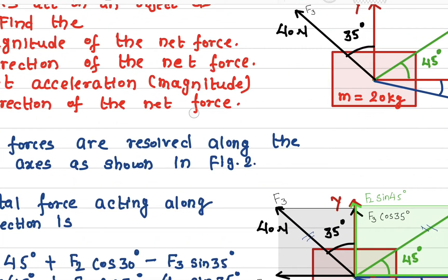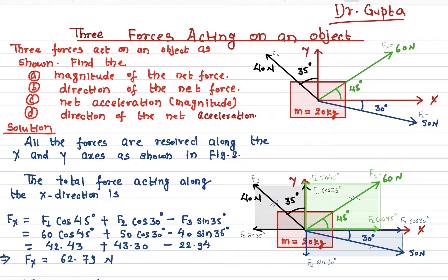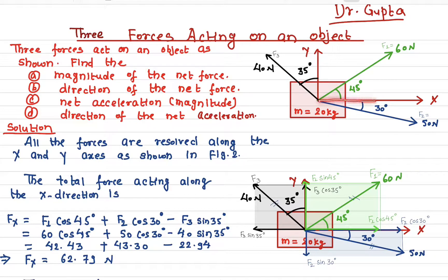Let me make one simple correction — it has to be an acceleration. So we have a mass here, an object, and three forces are acting: F1, F2, and F3. We have chosen an x-axis and a y-axis as our coordinate system. The angles of all the forces are given with respect to this coordinate system: F1 is at 45°, F2 is at 30°, and F3 is at 35°.